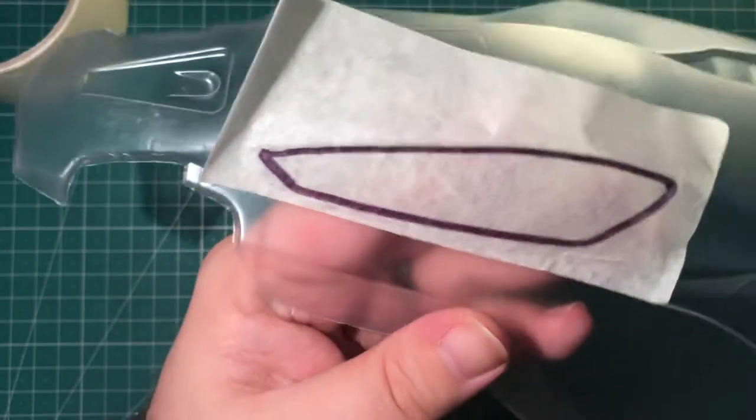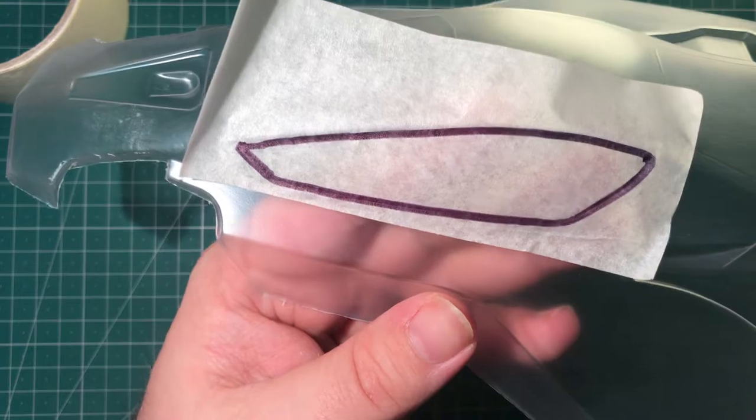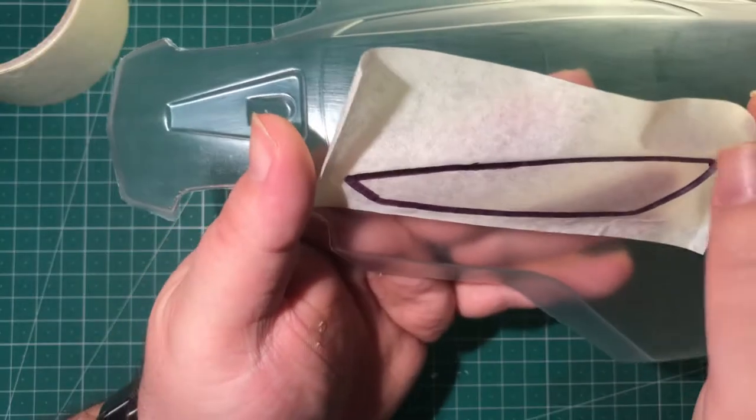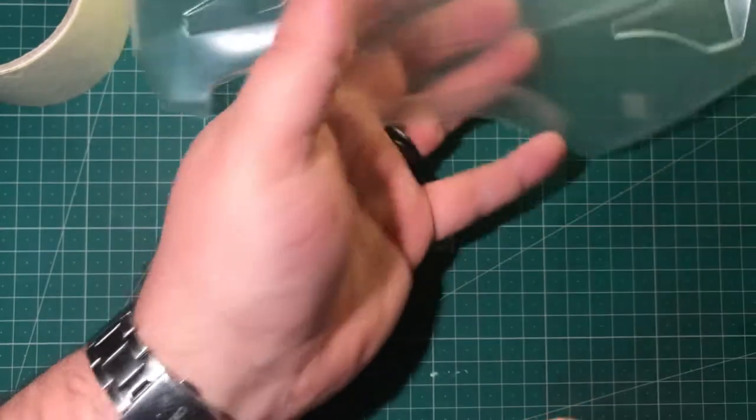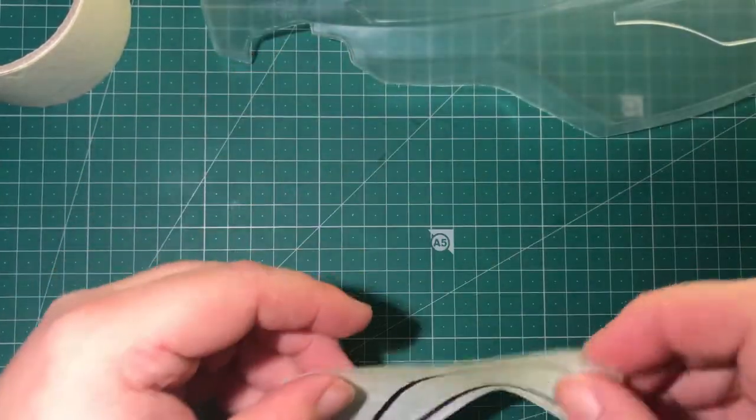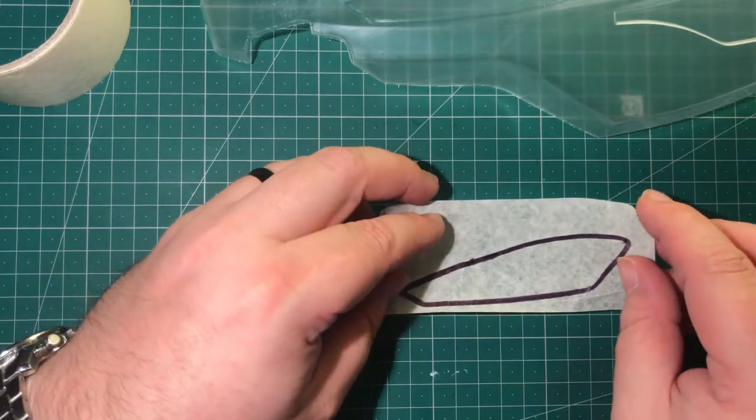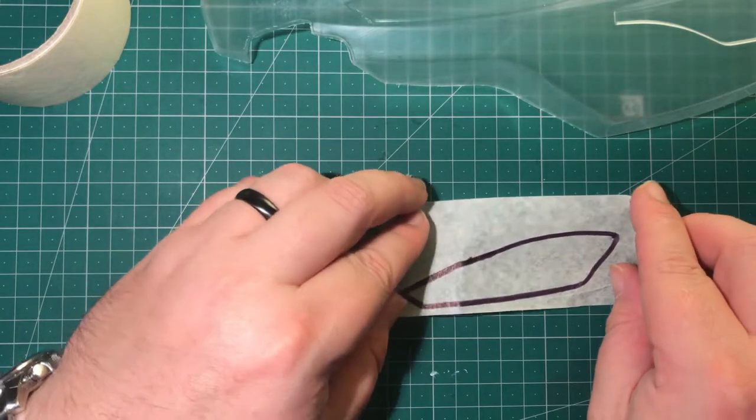When we are happy that the window has been drawn onto the tape, showing all the dimensions of the window, peel it off and lightly stick it to a surface that you can peel it off again and that you can also cut without damaging the surface underneath. These model mats are ideal.